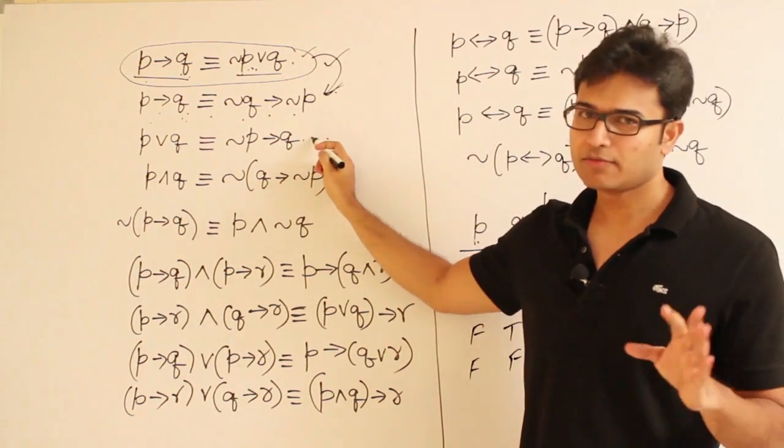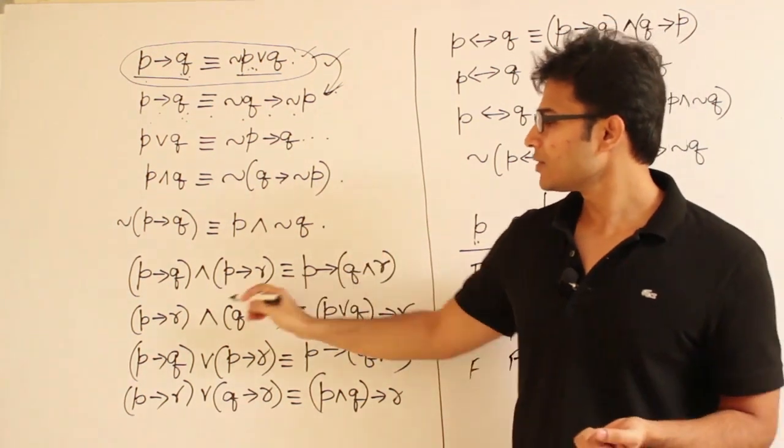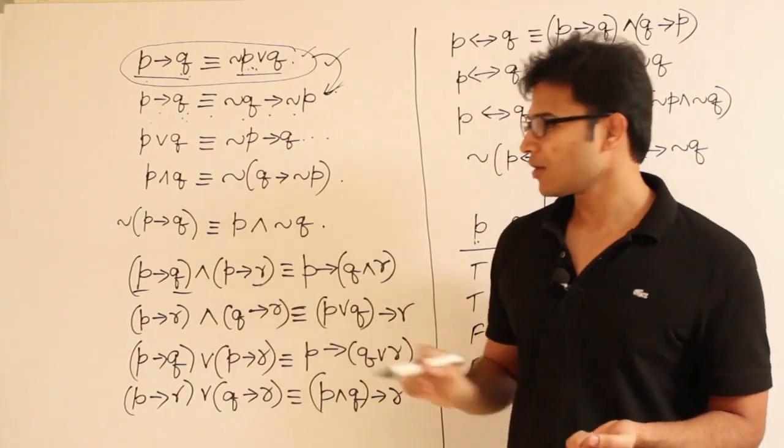And what about this one? Same way. Four rows, you can solve them. Four rows, you can solve them. Four rows, you can solve them. Now, if you observe this, here P, Q and R are given.